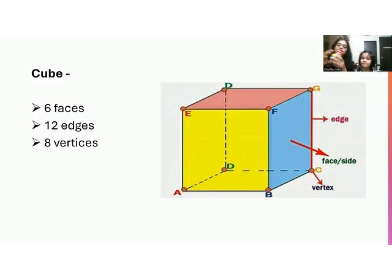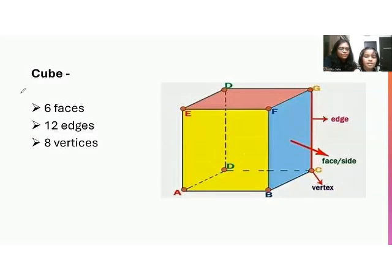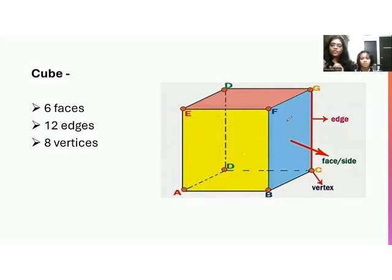Correct. So this is a cube. In a cube, how many faces are there, Ajvika? There is one face, two face, three face, four face, five face, and there is one in the front — that will become six. So in our cube structure, there are six faces, as Ajvika counted: one, two, three, four, five and six. So six faces are there.